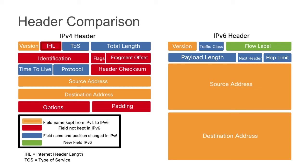You'll notice that a number of fields were left out: the identification, the flags, the fragment offset, and the header checksum. Those fragmentation fields — identification, flags, and fragment offset — were used for fragmenting the packet. In IPv6, the responsibility for fragmentation lies with the host. The host can do a path MTU discovery prior to sending packets and figure out what size to send them, rather than waiting for the network to fragment those packets. We also don't have a header checksum because we rely on the upper layer protocols, TCP and UDP, to perform the checksum.